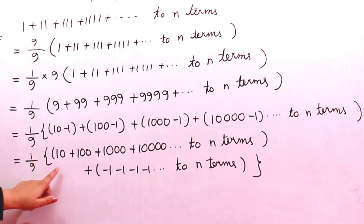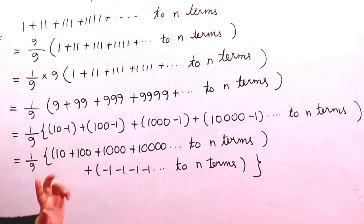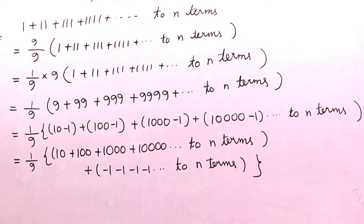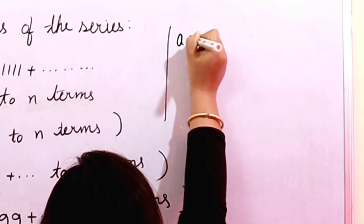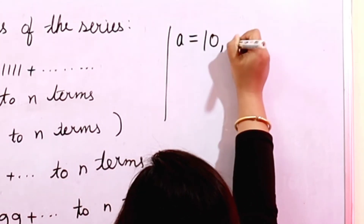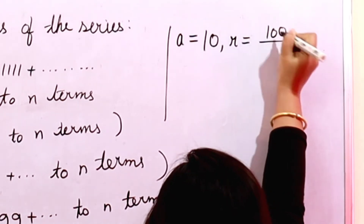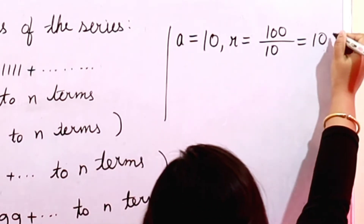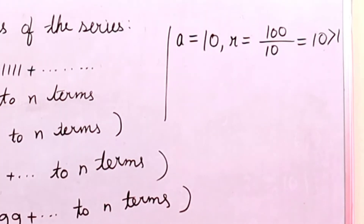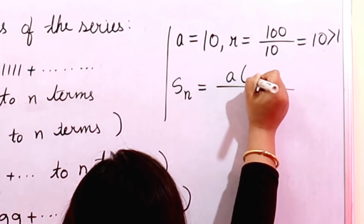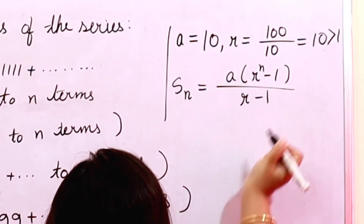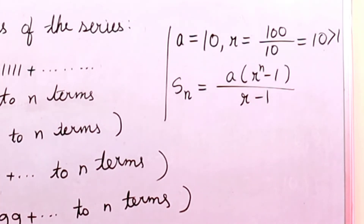The series 10, 100, 1000... is a geometric progression. The first term a is equal to 10. The common ratio r is 100 divided by 10, which equals 10, and 10 is greater than 1. Whenever r is greater than 1 in a GP, the summation formula is: S = a × (r^n − 1) / (r − 1).